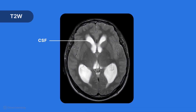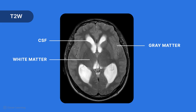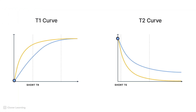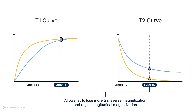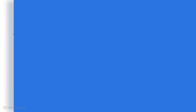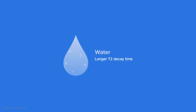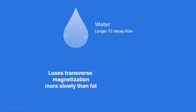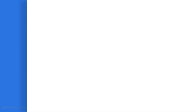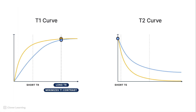There are many pathologies that result in increased water content in tissues, and T2-weighted images can detect the presence of edema, cysts, and other fluid accumulations. In order to achieve a T2-weighted image, we will need to adjust the echo time, TE. TE controls the amount of T2 contrast in an image. A longer TE combined with a longer TR allows fat to lose more of its transverse magnetization and regain its longitudinal magnetization, limiting signal intensity. Since water has a longer T2 decay time, it loses its transverse magnetization more slowly than fat, meaning it will have more signal intensity. A long TR minimizes T1 contrast, and a long TE maximizes T2 contrast.